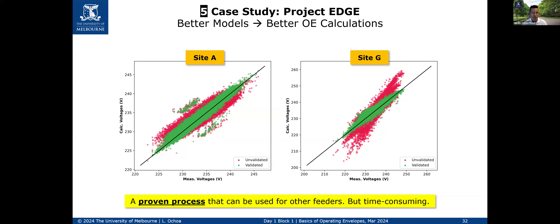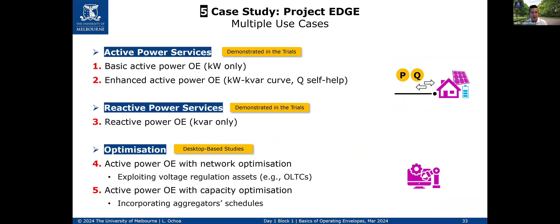The question is whether this is scalable for thousands of low voltage networks. In Project Edge it was done not just for three-phase low voltage networks but also for single-wire earth-return (SWER) rural networks common in Victoria. There were multiple use cases — not just active power services and operating envelope exports, but also reactive power services, optimization using tap changes to improve export and import capabilities, and incorporating aggregators at scale. I won't go into details here, but I encourage you to explore the webinars and reports.